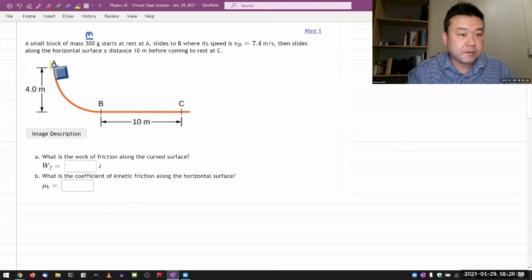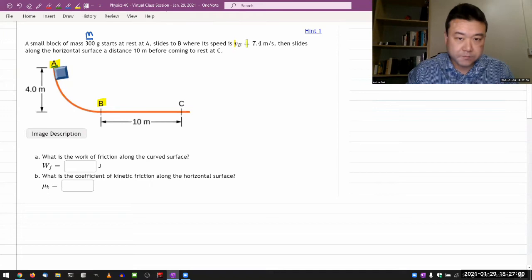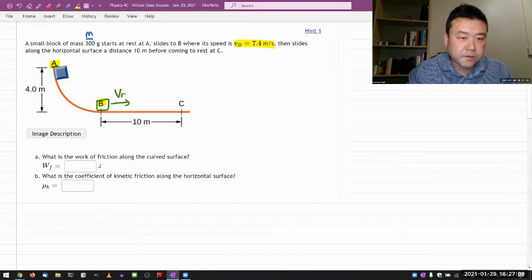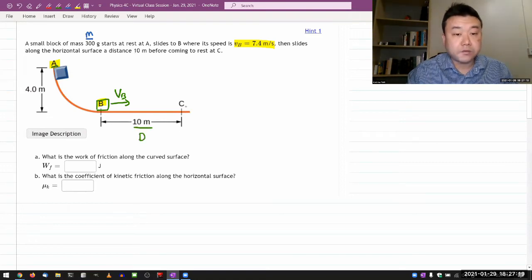Some block of mass M starts at rest at this point A, and it slides to a point B where I'm given the speed here. Let me just make a notation in the diagram. Then slides along the horizontal surface a distance of 10 meters, distance D, before coming to rest at C.